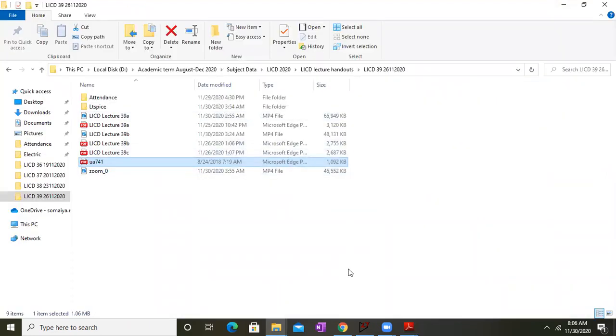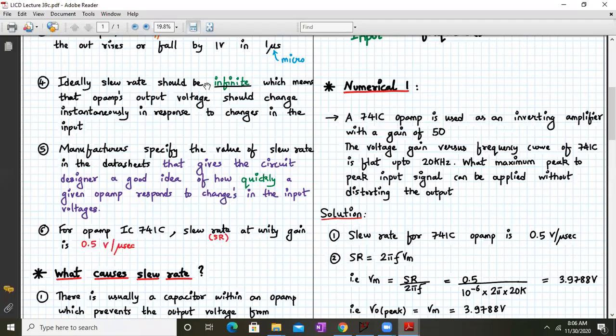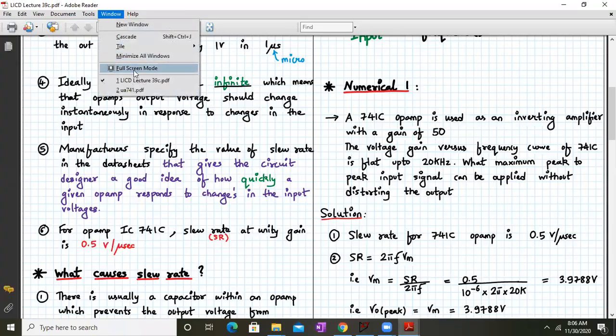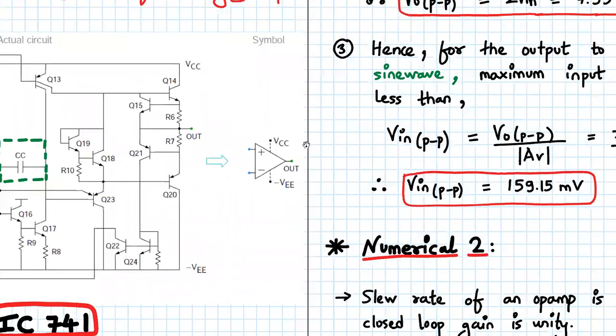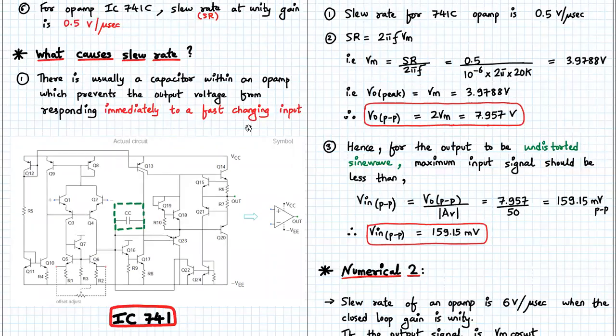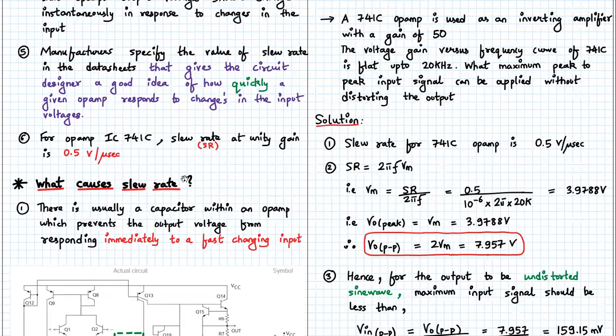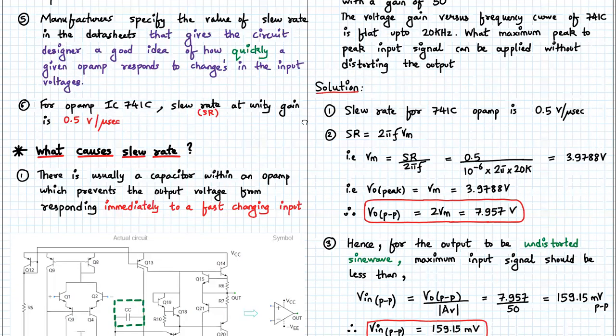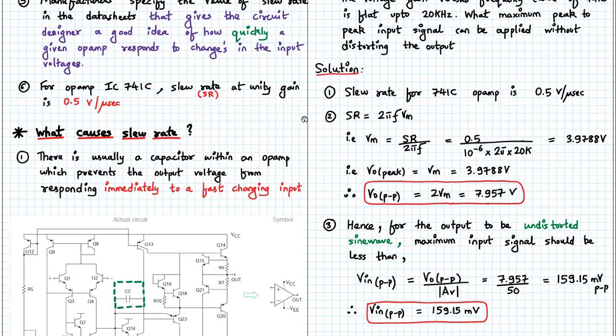Okay, that's why we have written over here 0.5 volts per microsecond. That's the value from the data sheet. Now next we will see what is slew rate. So we have seen the actual circuit of an op-amp, what are the internals of an op-amp.